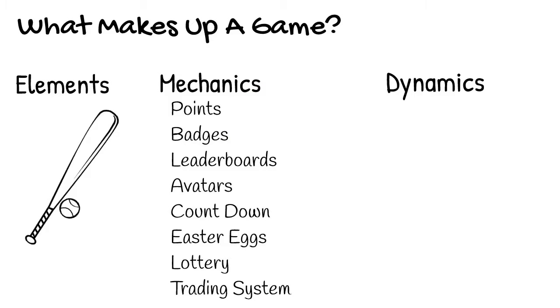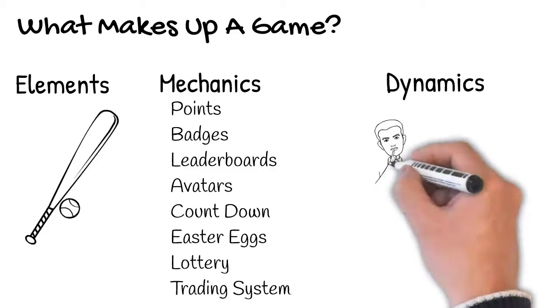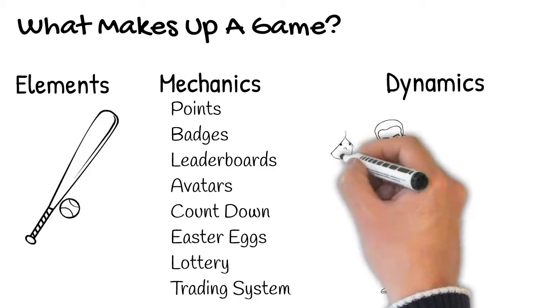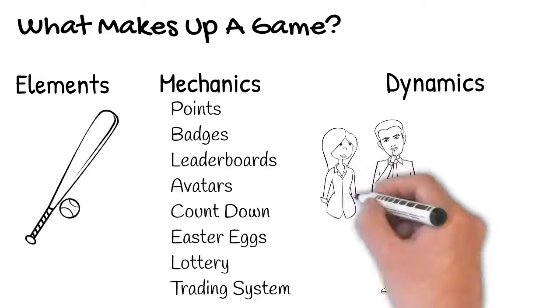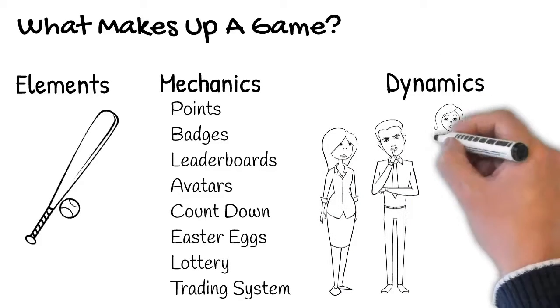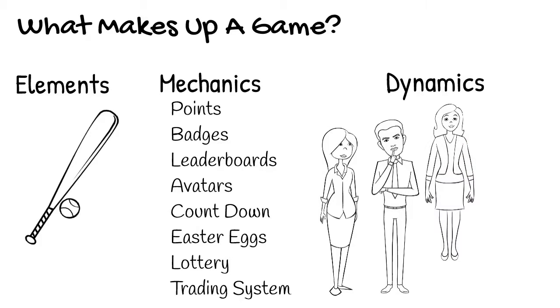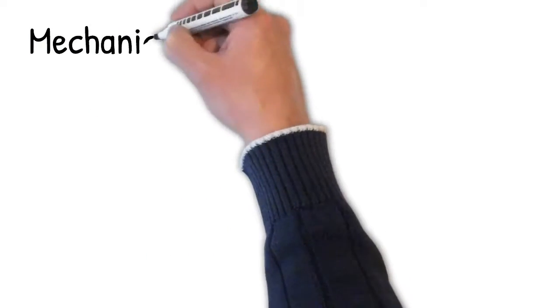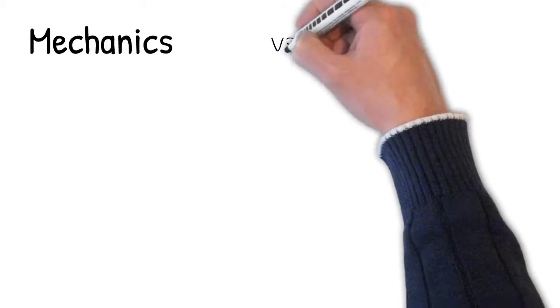Then we have dynamics, and this is where the mechanics come into play with people. Because people have different motivations, different reasons to play, different characters, personalities, structures, points of life, status, and so on. So the mechanics will appeal differently to different types of people.